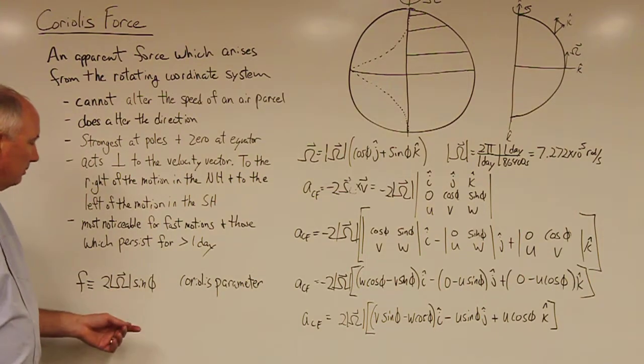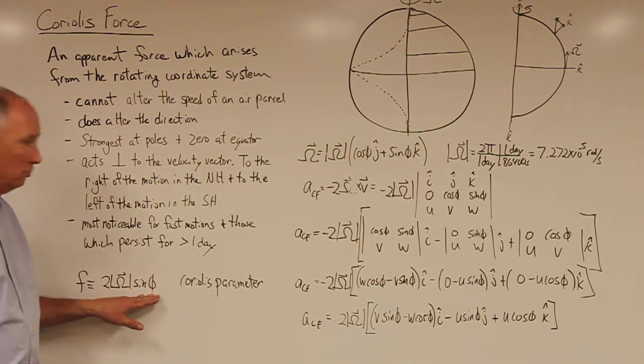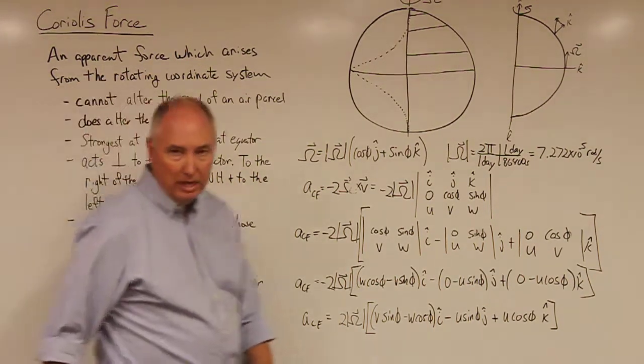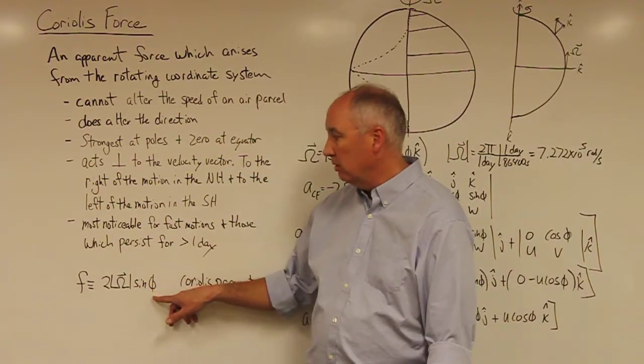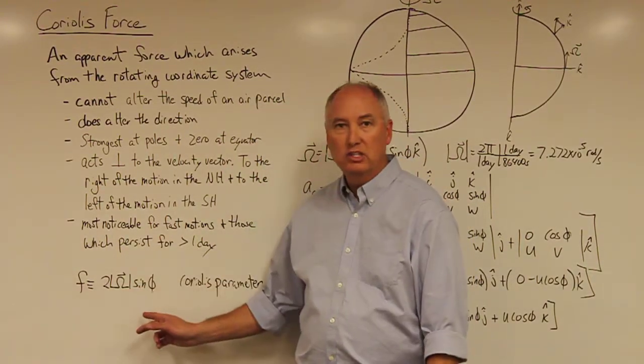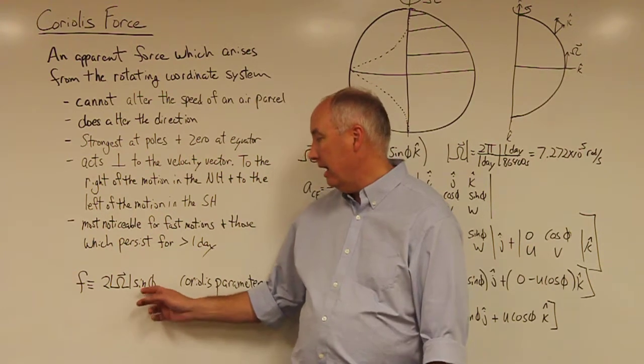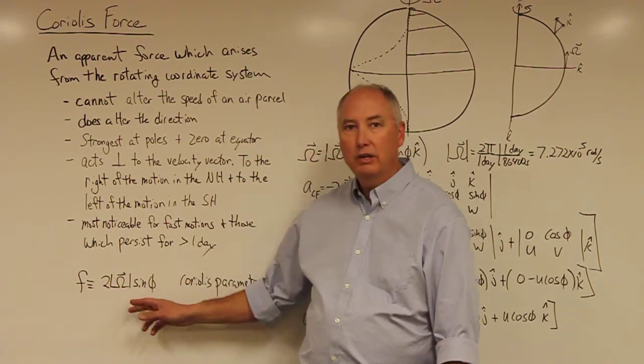The Coriolis parameter, you can see when you put in zero for the latitude, sine φ goes to zero. The Coriolis parameter goes to zero at the equator. And it will go to its largest value at the poles.